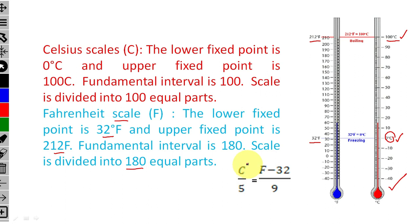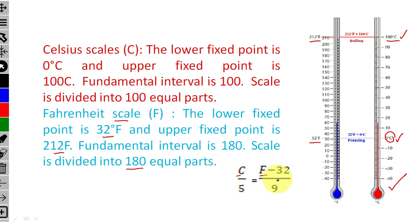To convert between Celsius and Fahrenheit, we use the formula: C divided by 5 equals F minus 32 divided by 9. We use this formula to convert a Celsius value to a Fahrenheit value. This is a 4-mark question.